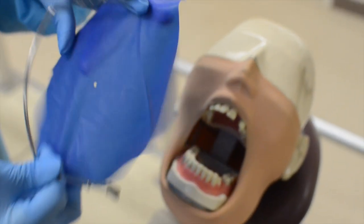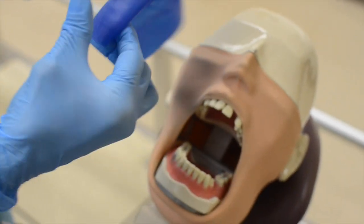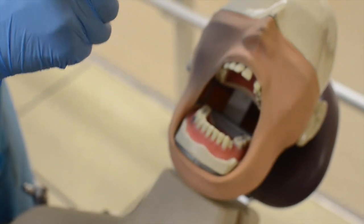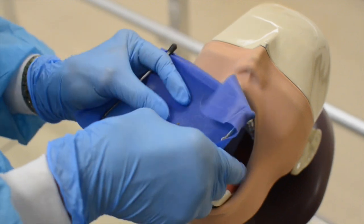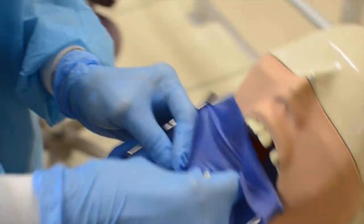There's one other clamp I want to demonstrate. This is one that you will use quite a bit in endo. And for some class fives, you may use it. Let's apply this. For this tooth, that little anterior clamp that we talked about, you have to put the rubber dam on first.